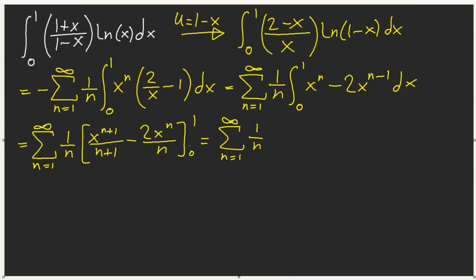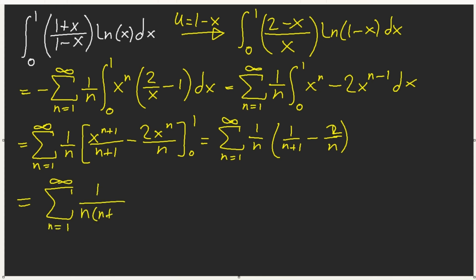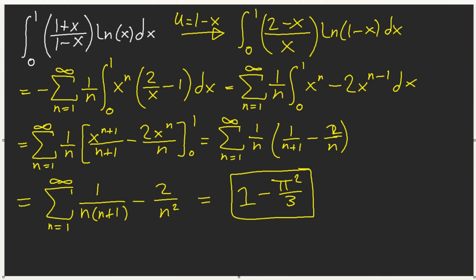Plugging in 0 gives nothing; plugging in 1 gives 1/(n+1) minus 2/n. What we have is a telescoping series, and so our answer is 1 minus... here it's π²/3. That's our answer.